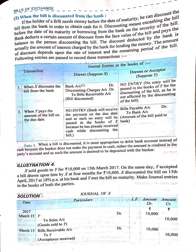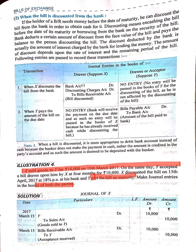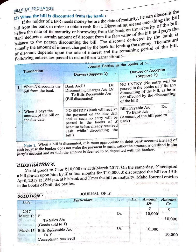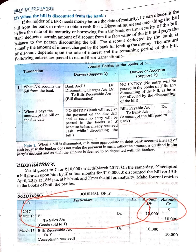Let's come to Question number 4. X sold goods to Y for Rs. 10,000 on 15th March. On the same date, Y accepted a bill of Rs. 10,000. X discounted the bill at 18% per annum from his bank. First, X is selling the goods: entry will be Y debit to Sales, Rs. 10,000. After that, Bills Receivable Account debit to Y, Rs. 10,000.